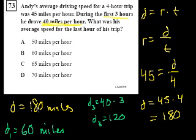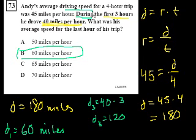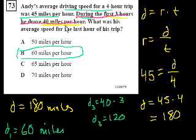He went 60 miles in that last hour, so he went 60 miles per hour — choice B. This might seem complicated, but it's all about distance equals rate times time: use the first statement to find total distance, the second to find distance in the first three hours, and then you know how far he had to travel in the last hour.